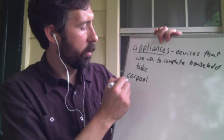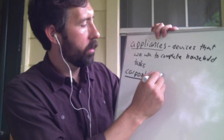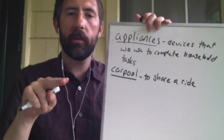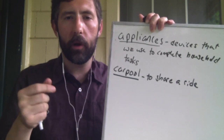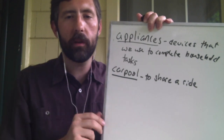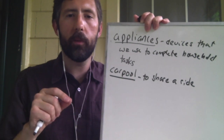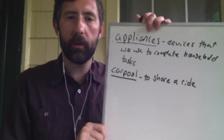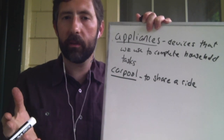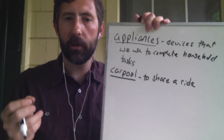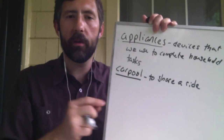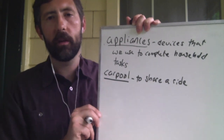Our next word is 'carpool,' which means to share a ride. Instead of Bob and me both driving our own cars to the same place — two people, two cars — a carpool would be Bob and I riding in the same car to the same place. If you live in an apartment complex and you and a neighbor are both coming to English class, and you ride together, you are carpooling. You are sharing a ride to get to the same place.